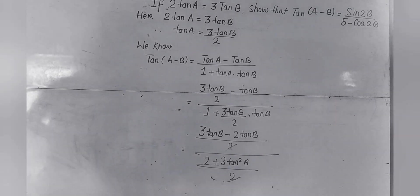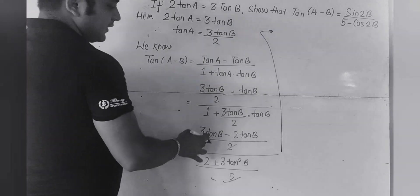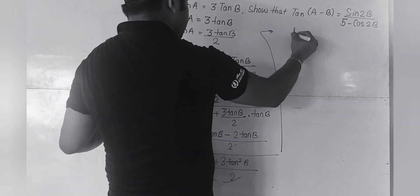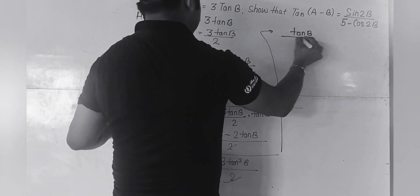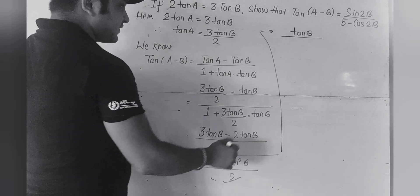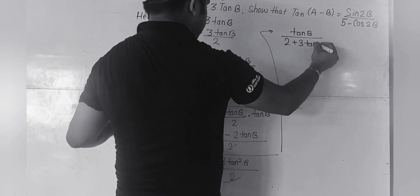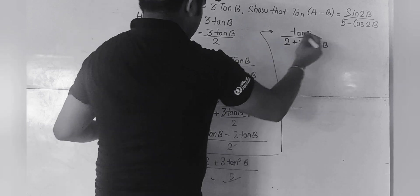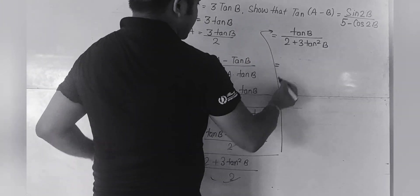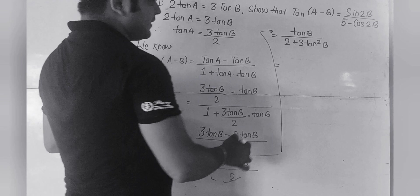We got (tanA - tanB) simplified as tanB / (2 + 3tan²B). Now we can substitute tanB as sinB/cosB.